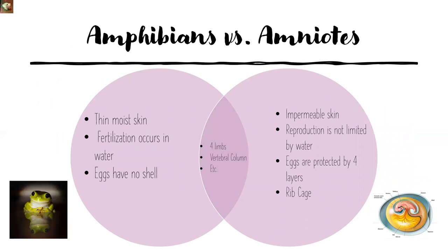This Venn diagram summarizes the previous two slides comparing amphibians versus amniotes. As a study tip, when comparing two closely related topics, making a Venn diagram helps organize the information and clarify what is similar and what is different.